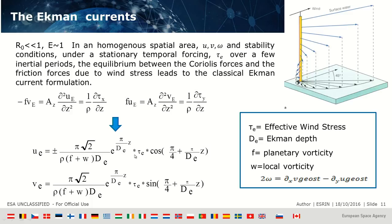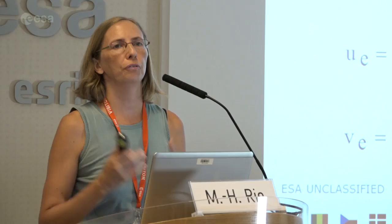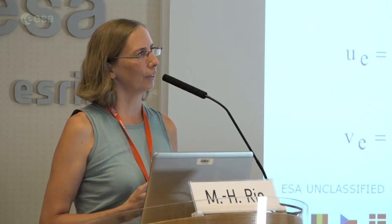To calculate Ekman current, you need an effective wind stress — which is wind stress relative to ocean currents — an Ekman depth, the Coriolis parameter, and a local vorticity term W. Tomorrow you will see how, from different observations only, we are able to give an empirical formulation of this Ekman current for the global ocean.